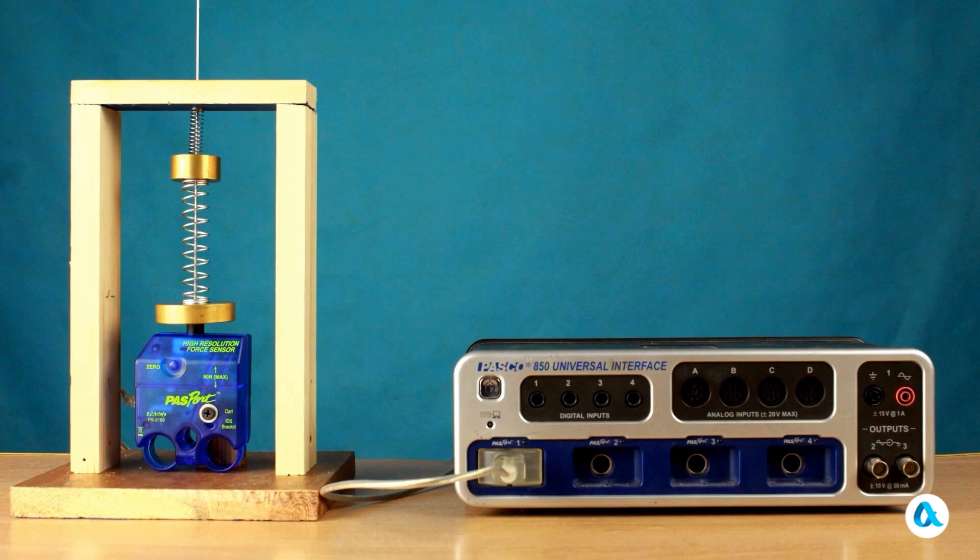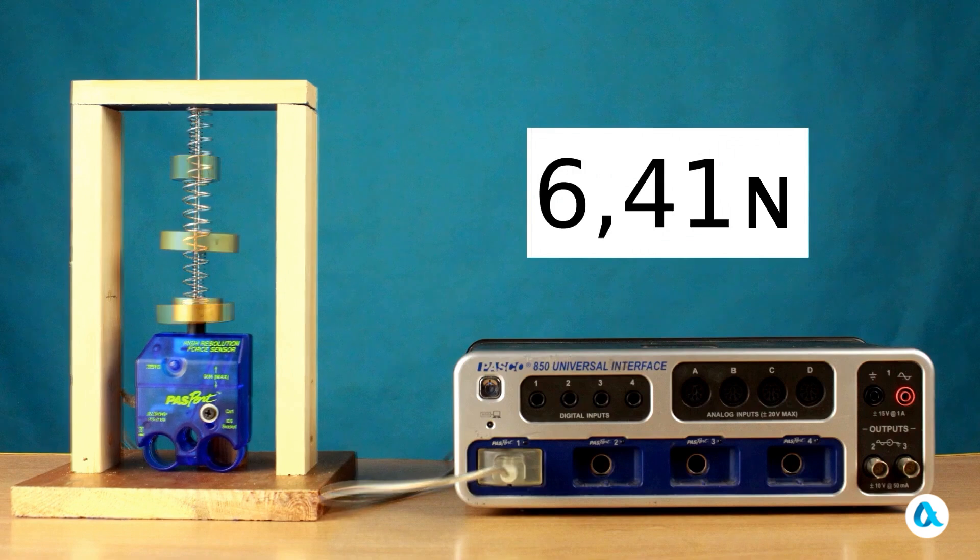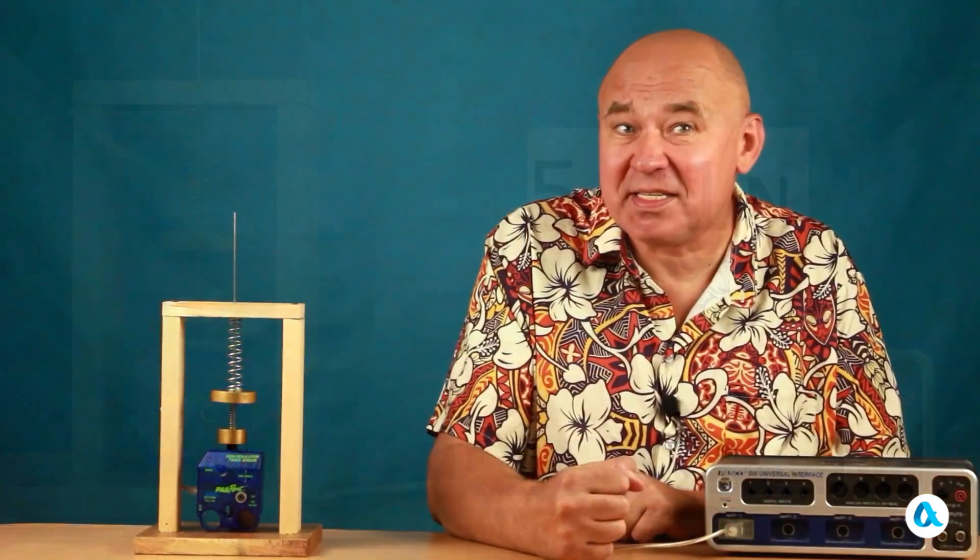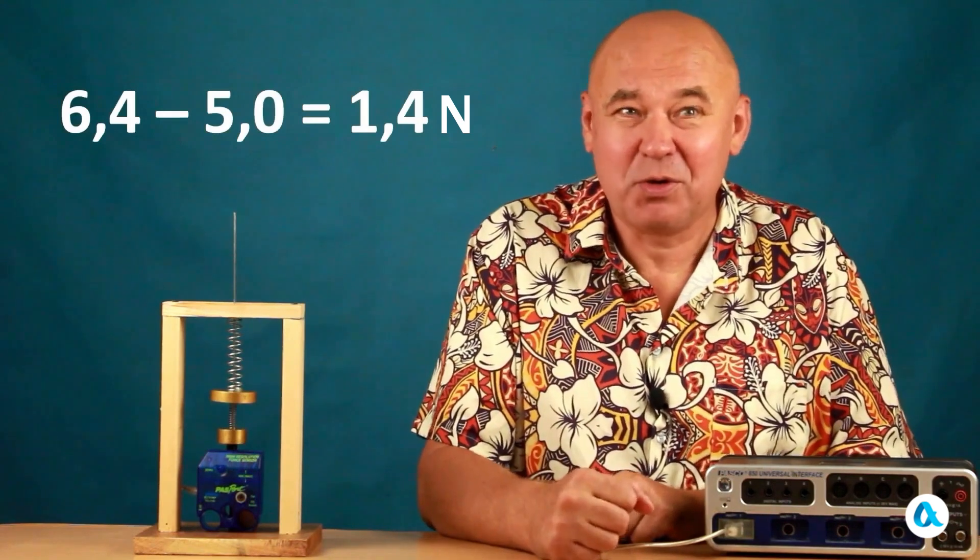When there is a heavy weight and a stiff spring at the bottom, the sensor shows a load of 6.4 newtons. Let's swap the weights and springs. The load decreased to 5 newtons. The effect is indeed observed. The difference in the sensor readings in two different positions of the weights and springs was 1.4 newtons.